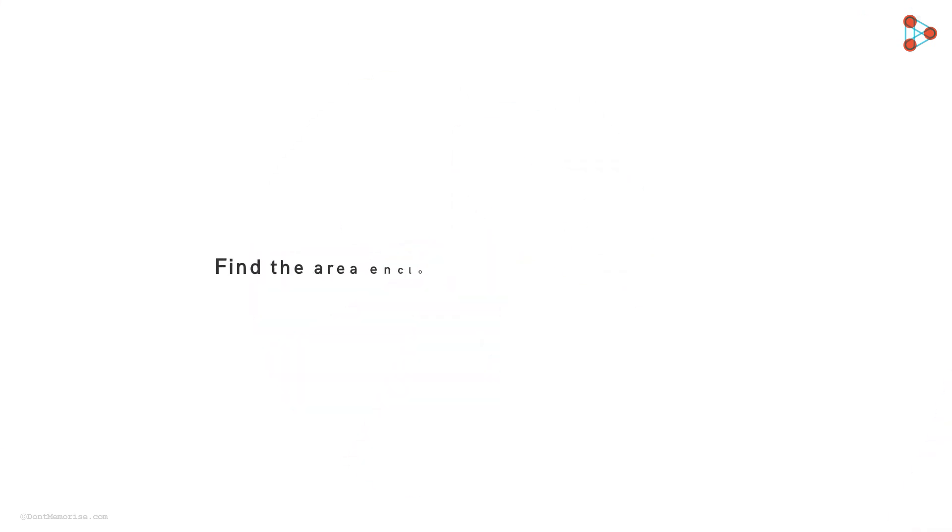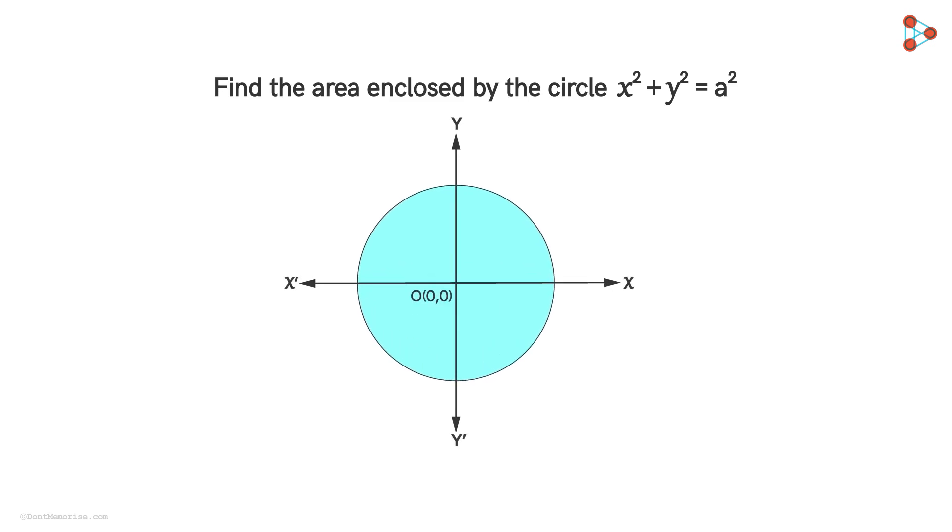The example asks us to find the area enclosed by the circle x² + y² = a². Now x² + y² = a² is the equation of a circle with center at (0,0). So with the help of the equation, can you tell me its radius? Yes, the radius of the given circle will be a.